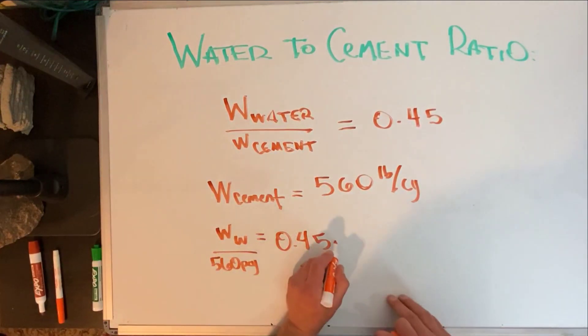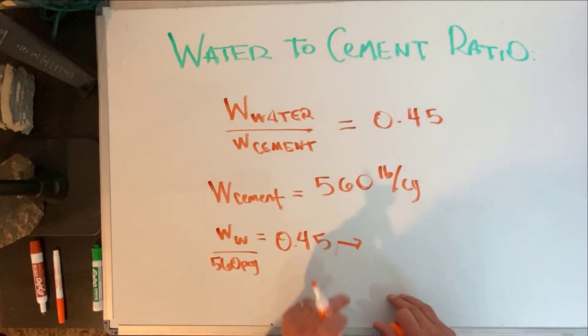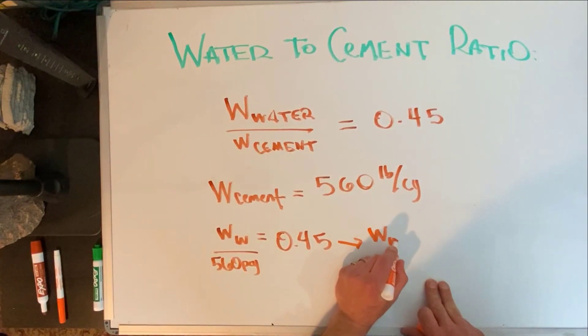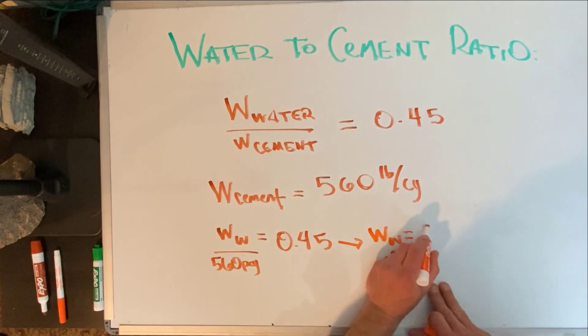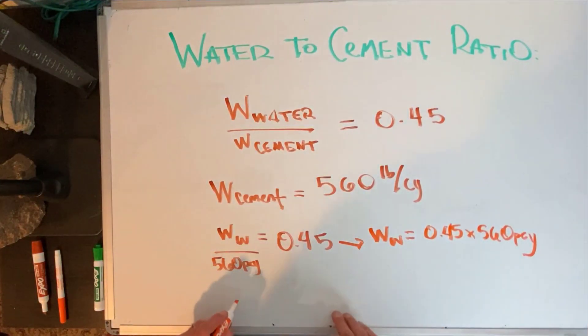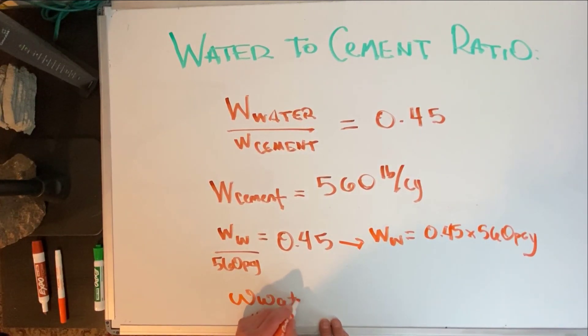Now what I'll do from there is a little mathematics and gymnastics, so I have my weight of water equals 0.45 times 560 pounds per cubic yard. Fantastic! So therefore my weight of water is going to...